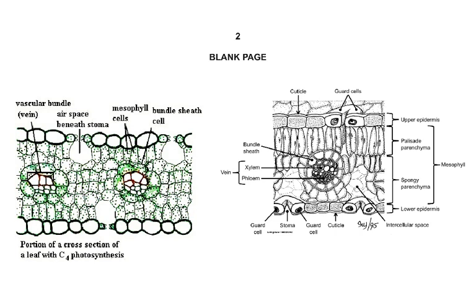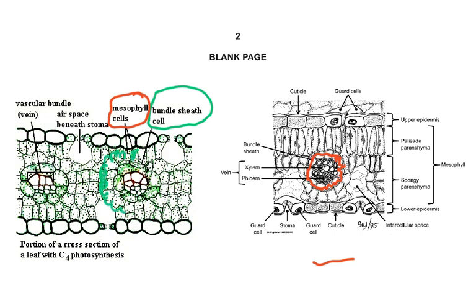Looking at the diagram, you need to understand where the xylem, phloem, and bundle sheath cells are, and where the mesophyll cells are. The bundle sheath cells form a ring around the vascular bundle — I'm shading them in red. The mesophyll cells are on the outside. So the bundle sheath cell is here, and the surrounding cells are the mesophyll cells.